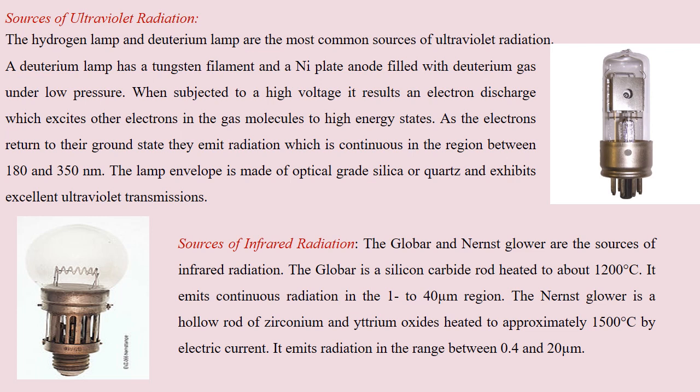Another source of radiation is infrared radiation. For this, a globar or Nernst globar are the sources of infrared radiation, which is generally a silicon carbide rod heated to about 1200 degrees Celsius, emitting continuous radiation in the range of 1 to 40 micrometers.